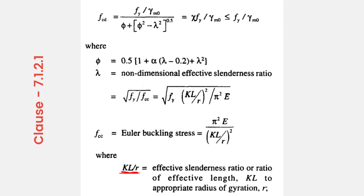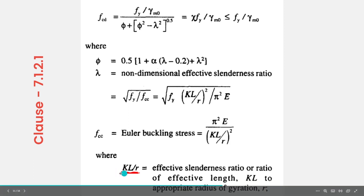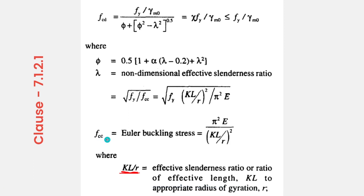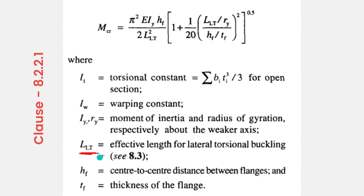We need to dig a little deeper into these limit states. As per clause 7.1.2.1 of IS 800, we require effective length to determine buckling moment, which leads to design bending strength of the member, which in turn is used to determine the compressive strength about major and minor axis. Similarly, as per clause 8.2.2.1, we require effective length for lateral torsional buckling to determine the buckling moment, which leads to design bending strength against LTB. Now we know which limit states require effective length and where we use these parameters.